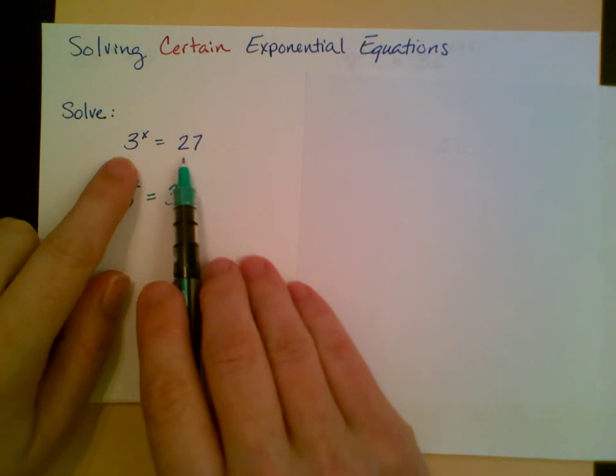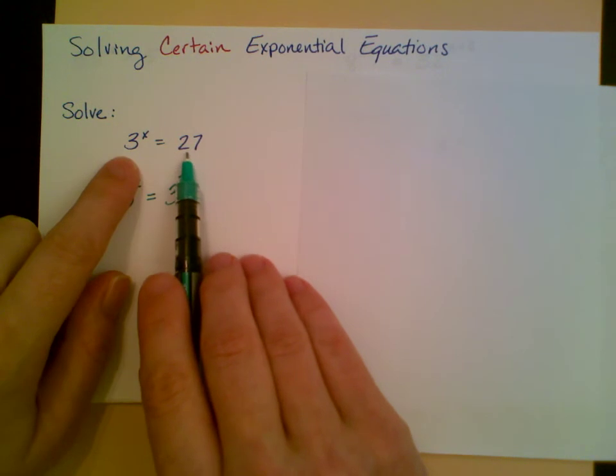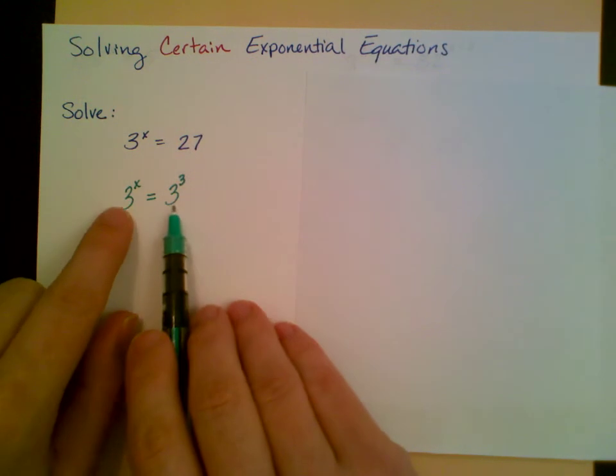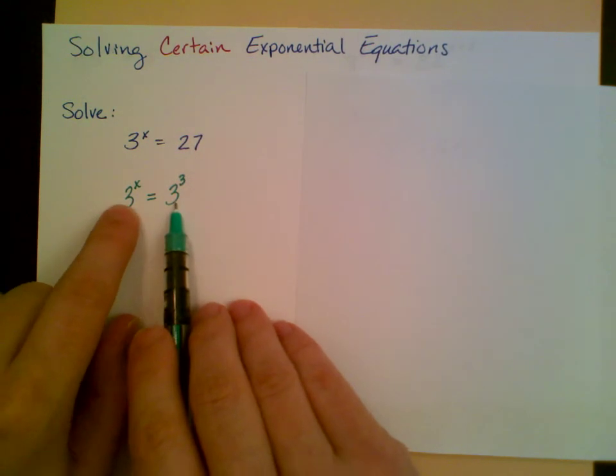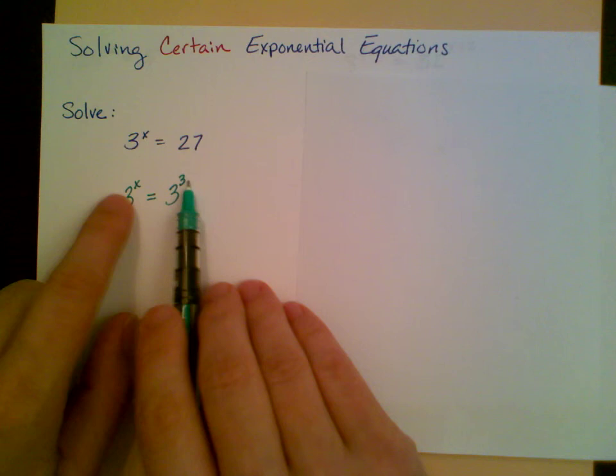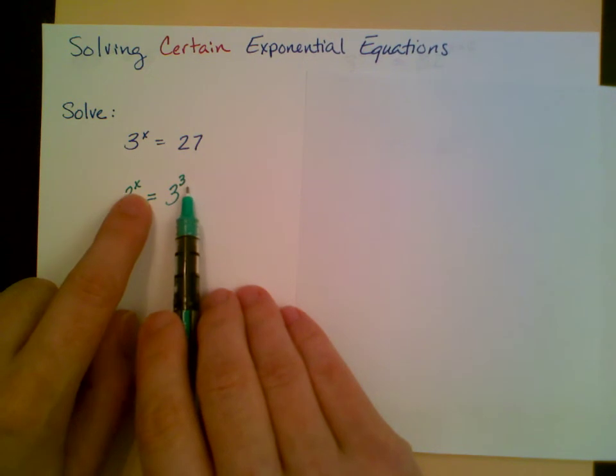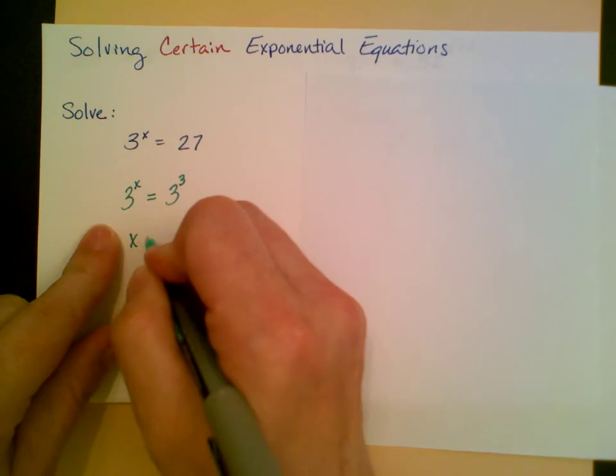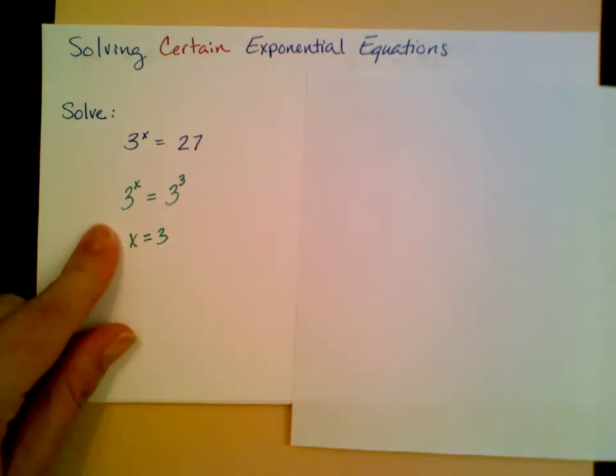What I want to emphasize here is that if I can write both sides of an equation as the same positive base to exponents, then I can set the exponents equal to each other. So since 3 to the x equals 3 to the 3, x must equal 3.